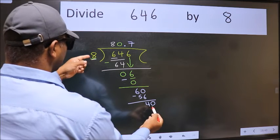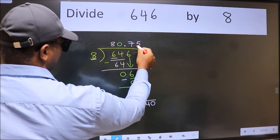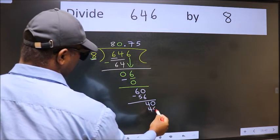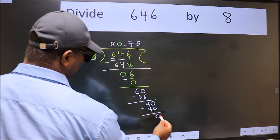When do we get 40 in 8 table? 8 5s, 40. Now we subtract. We get 0.